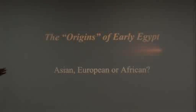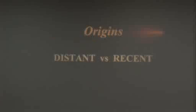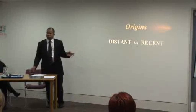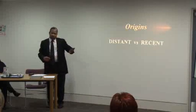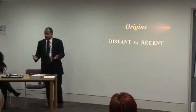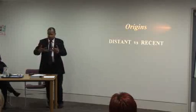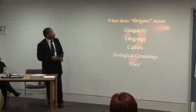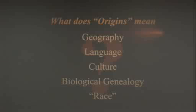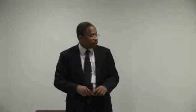People want to say Asian, European, or African — these are very big terms which in themselves may have problems. When we talk about origins, we can talk about things long ago or more recent origins. Are we talking about the origins of the Egyptian state, when they developed kings and a recognizable Egypt, or its more distant roots? We can identify elements that surely went into it. Origins could mean geography, language, culture, biological genealogy, or in big quotes, the notion of race.